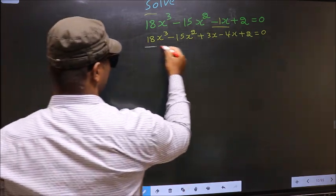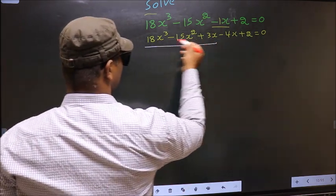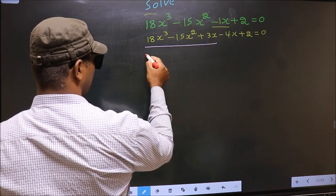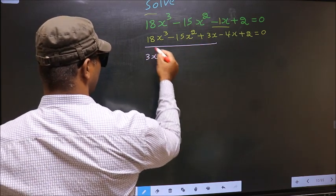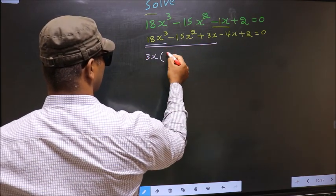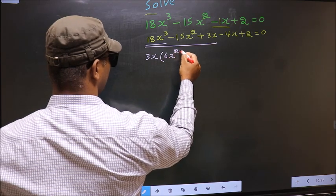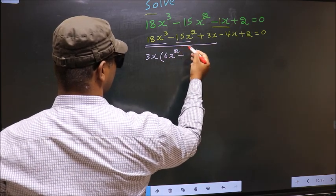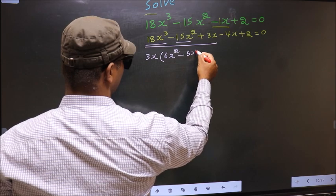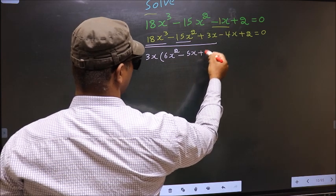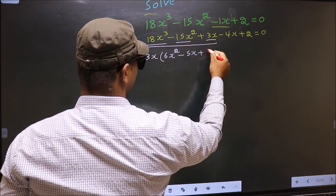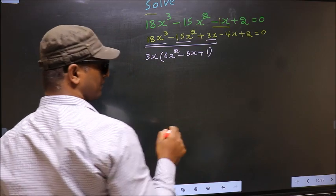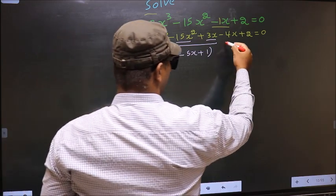Now from these 3 terms, what can be taken out common is 3x. So here you get 6x square minus 5x plus, from this 3x out you get 1.